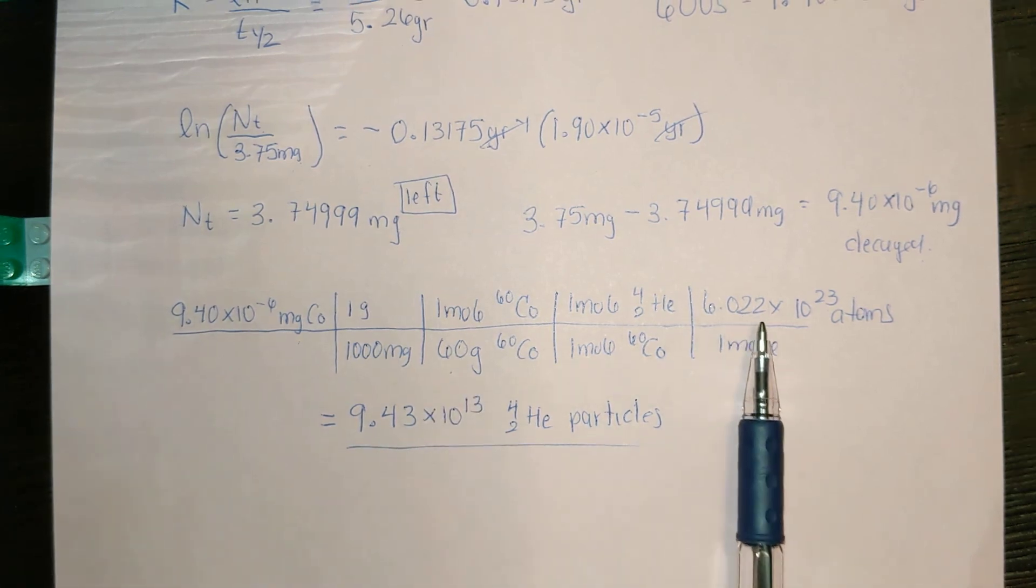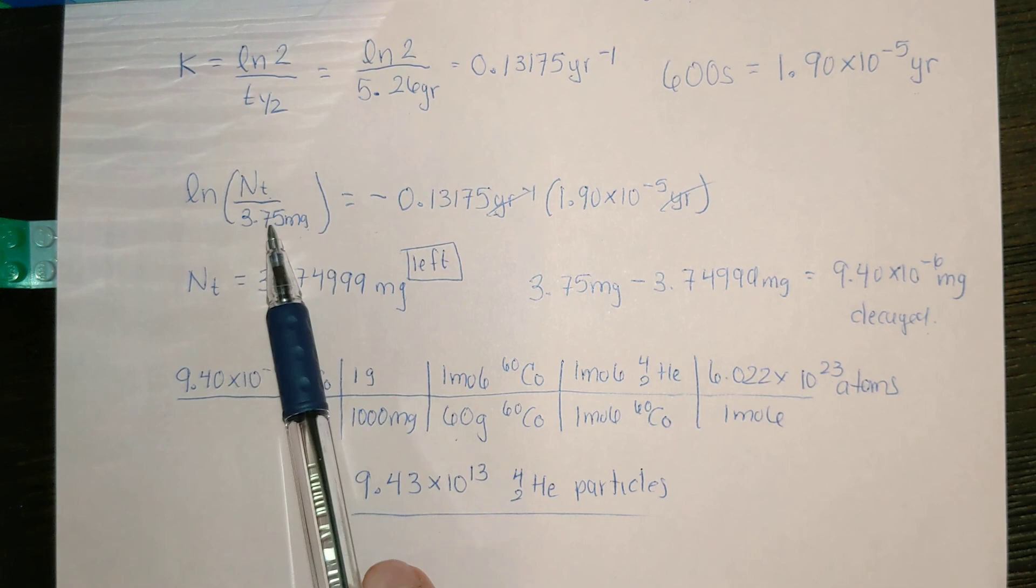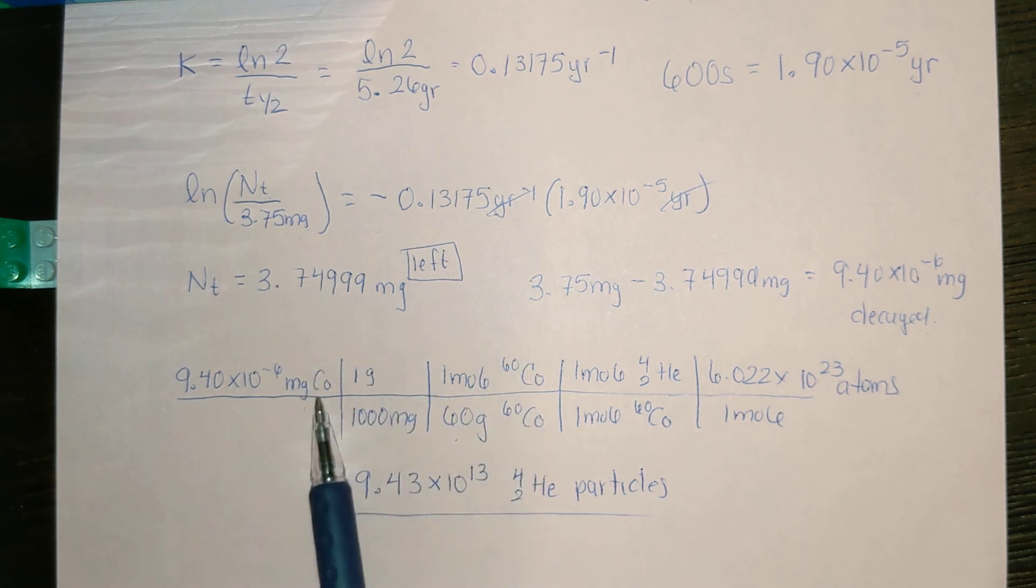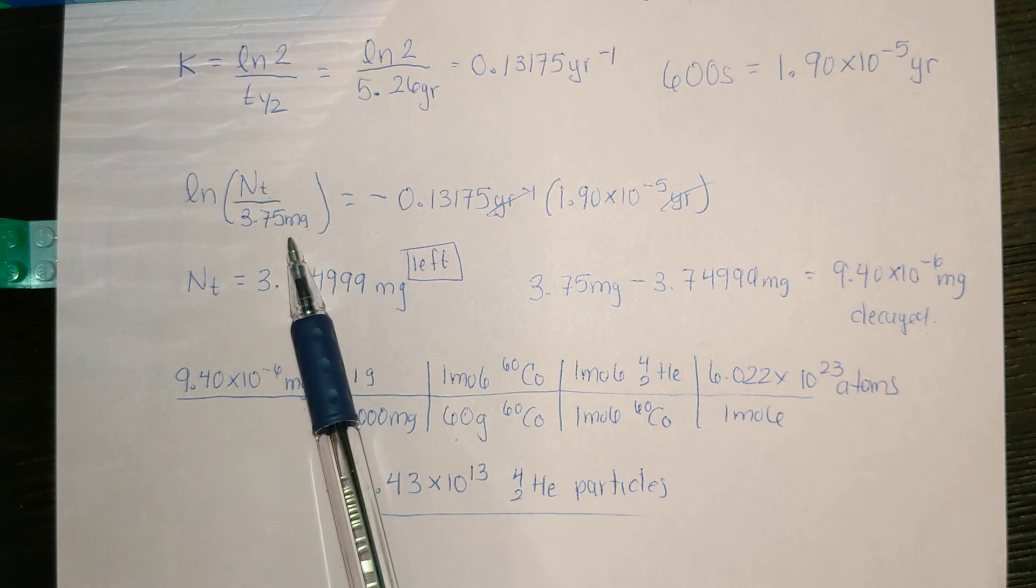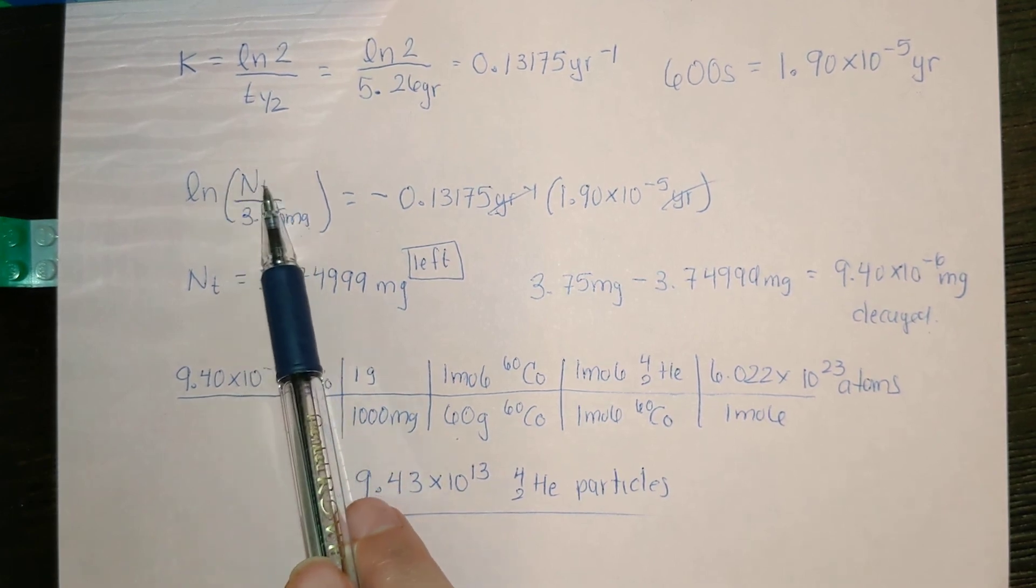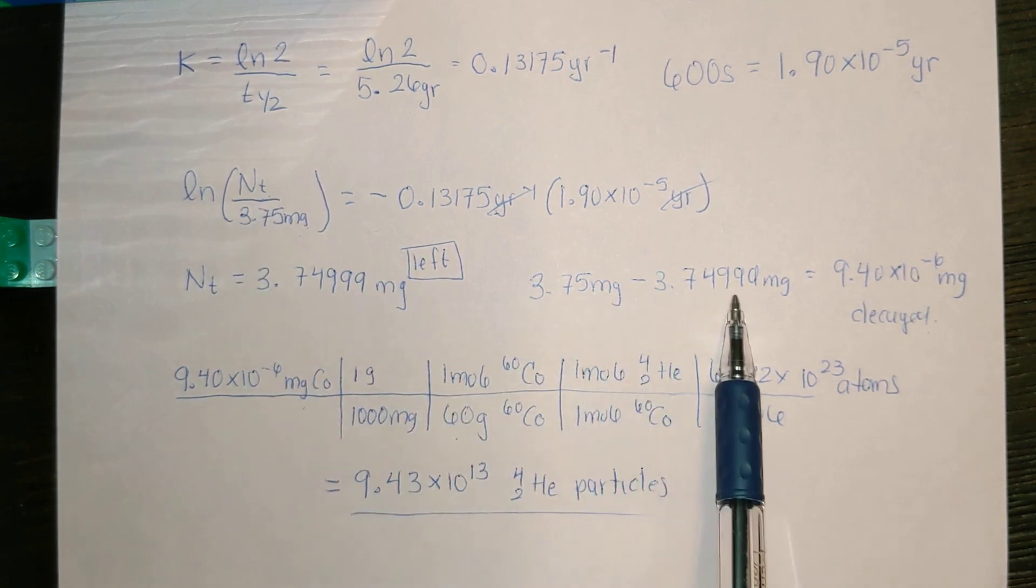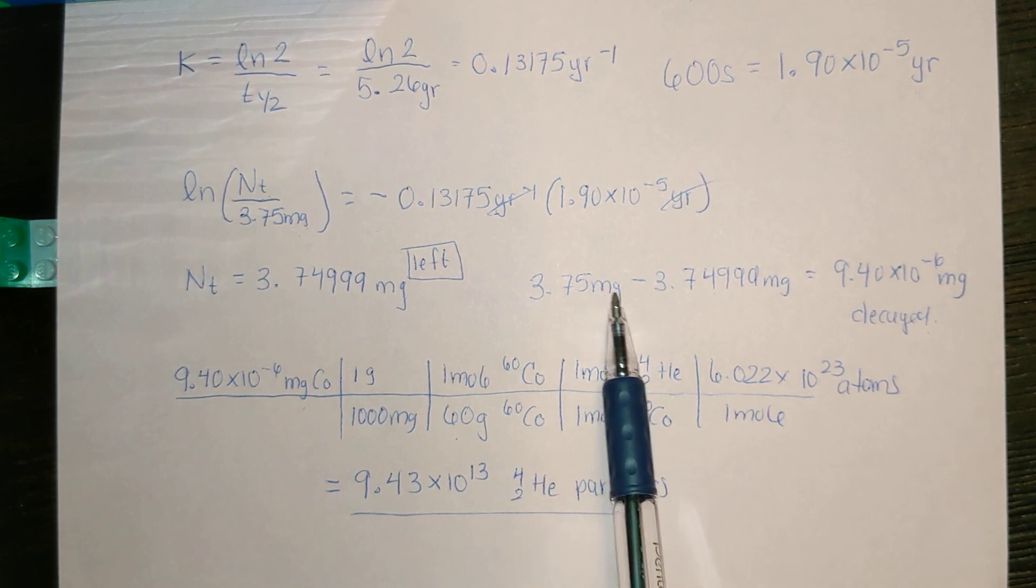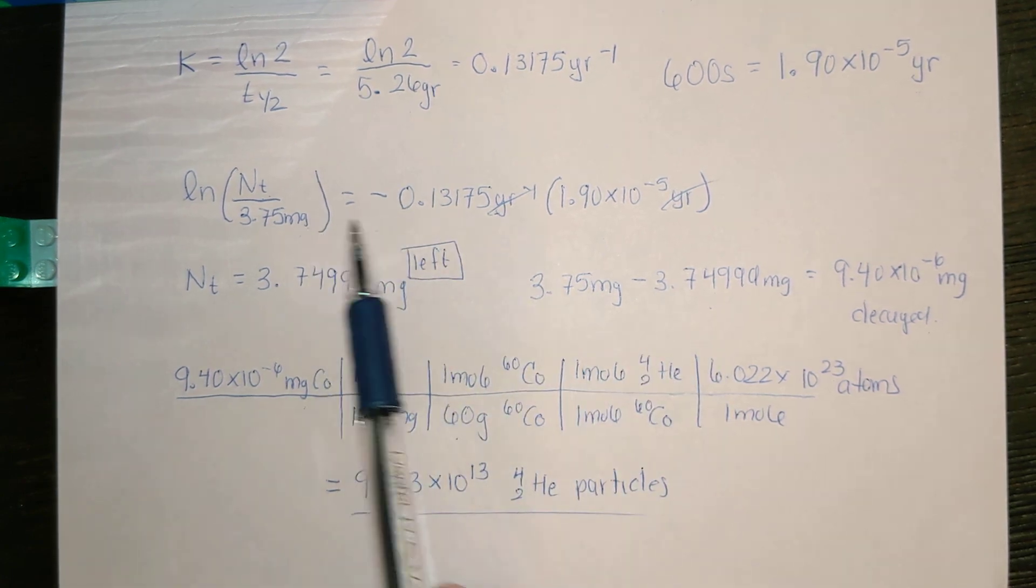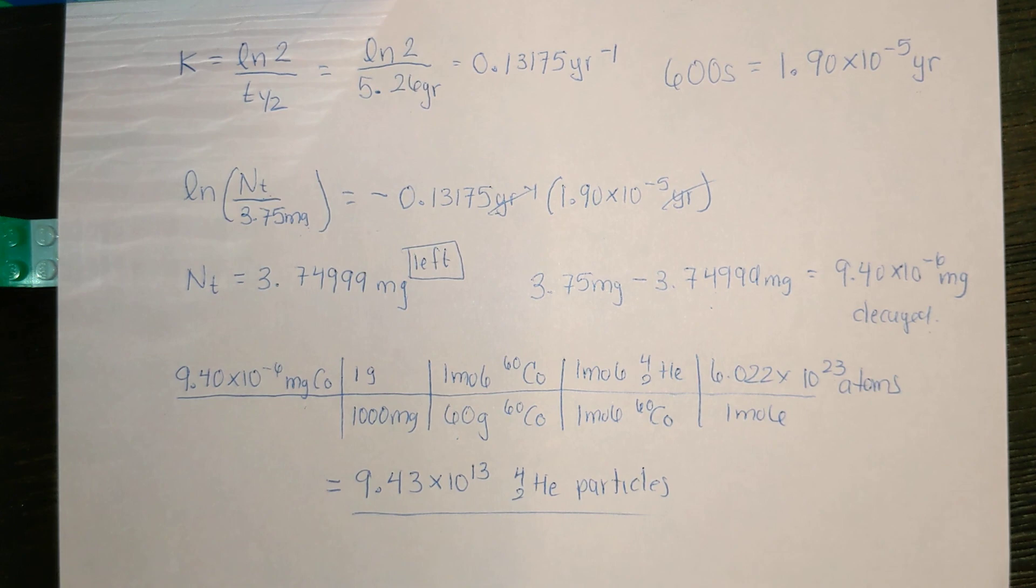You could have, if you wanted to, before you use this one up here, taken this 3.75 milligrams and converted it into actual atoms of cobalt-60 and put that in here. If you would have done that when you solve for NT, then you would already have the number of atoms that are remaining. Instead of getting this in terms of milligrams, this would have been your atoms of radioactive cobalt that are remaining after the time. Either way would have been fine. Mass difference here, converting it to atoms. Or you can convert it first, before you put it in here. Either way would work out.